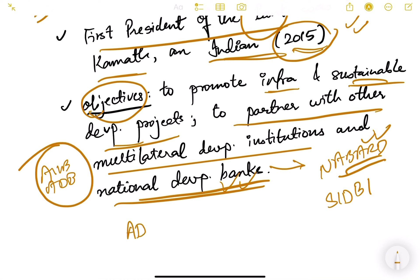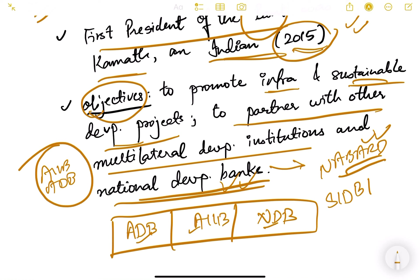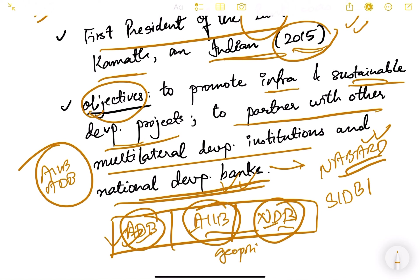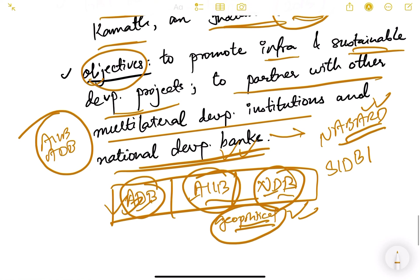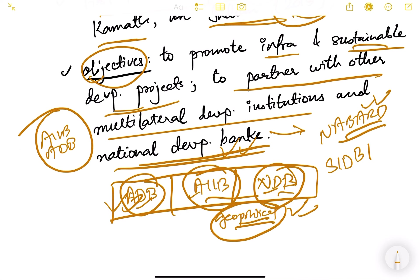To summarize, today we covered three organizations: ADB, AIIB, and NDB. A key point to remember is that America and Japan are NOT members of AIIB or NDB — they are only members of ADB. From a geopolitical standpoint, these institutions reflect how international economic policy is evolving. This is also relevant for GS2 — the international relations paper. If you have any questions, ask in the comment section.